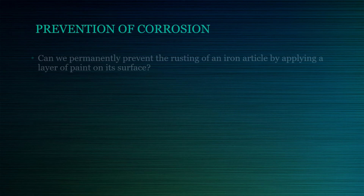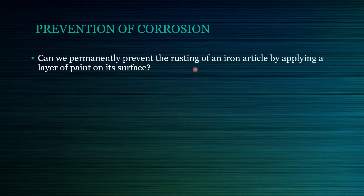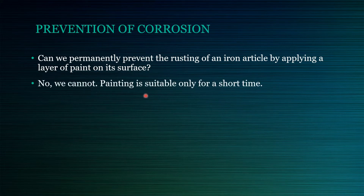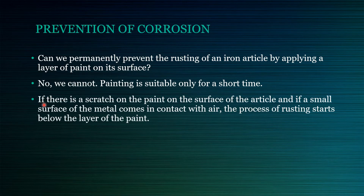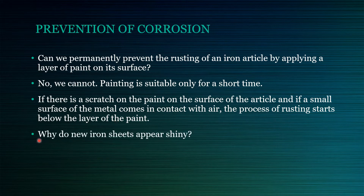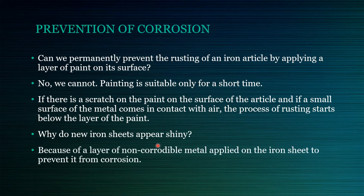Can we permanently prevent the rusting of iron by applying a layer of paint on its surface? Actually, we cannot. Painting is suitable only for a short time. If there is a scratch on the paint and a small surface of the metal comes in contact with air, the process of rusting starts below the layer of paint. New iron sheets appear very shiny because a layer of a non-corrodible metal is applied on the iron sheet to prevent it from corrosion. It is time we learn about various methods to prevent corrosion.